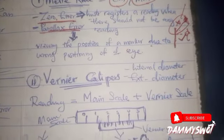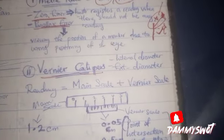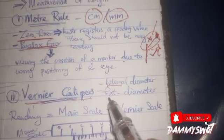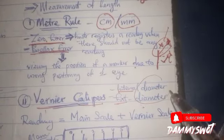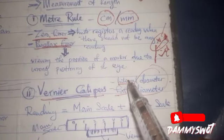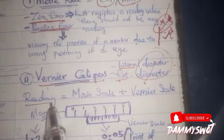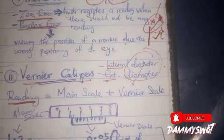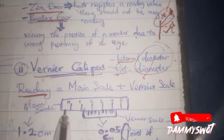The Vernier caliper is basically used to measure the internal or external diameter of any object. Now, a Vernier caliper consists of two scales which you must know: the main scale and the Vernier scale.